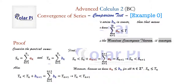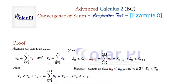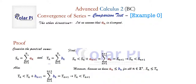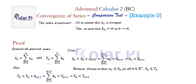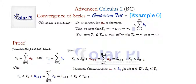Now for the other direction — we want to show divergence. Let's assume that the infinite series with a sub n is divergent. Then that means that s sub n goes to infinity as n goes to infinity. But then, because we said that s sub n is less than or equal to t sub n, it must follow that t sub n goes to infinity as n goes to infinity, meaning that t sub infinity goes to infinity — that is, the infinite series with b sub n is divergent.